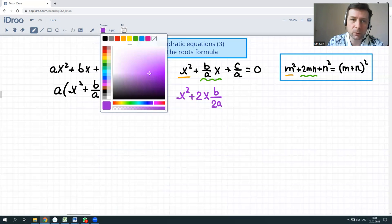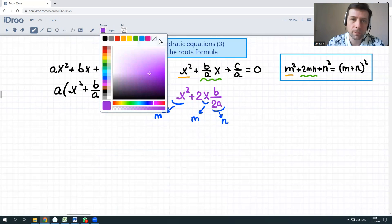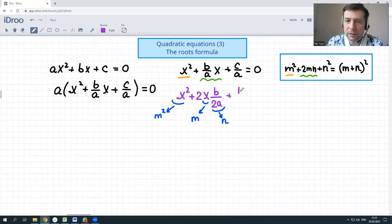What does it mean? That x corresponds to m in the expression, and b over 2a corresponds to n. Let me one more time make it sure. x corresponds to m and x squared to m squared. x again corresponds to m, and b over 2a corresponds to n. What should follow? n squared means b over 2a squared.